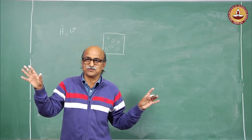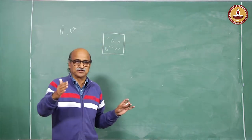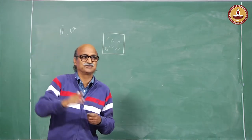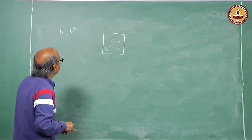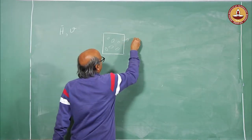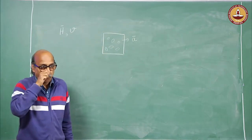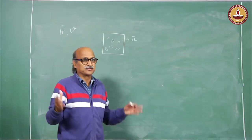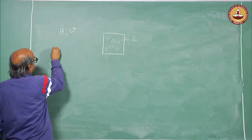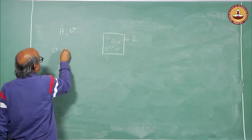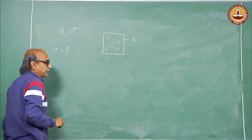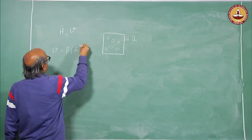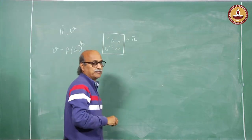For example, if we have cylindrical particles of constant size and shape and section them, we can get a circle, an ellipse, or a truncated ellipse if the section passes through one of the ends of the cylinder. We can get an average area of these particles by measuring the areas and taking the average. For particles of constant size and shape, volume equals beta times the average profile area to the power 3/2.